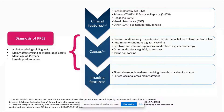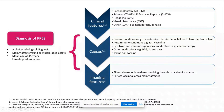It can affect people at any age, but it mainly tends to affect young or middle-aged adults with a mean age of 45 years. It also has a female predominance, even excluding patients with eclampsia and preeclampsia.